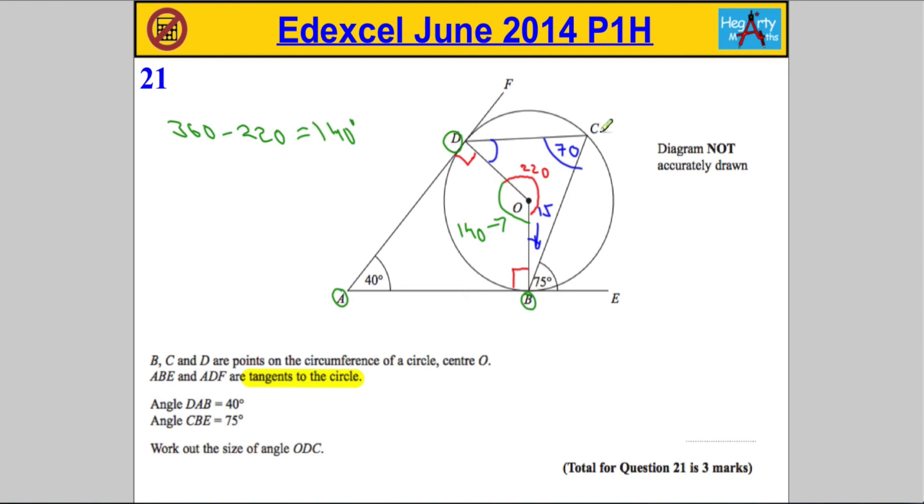Now the last part, let's see if we can figure out what our angle at D is here, CDO. Now I'm going to highlight these four letters here, and hopefully you can see that actually we've got another quadrilateral. We've got a four-sided shape here, means 360°.